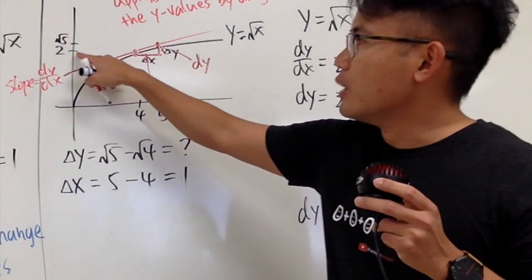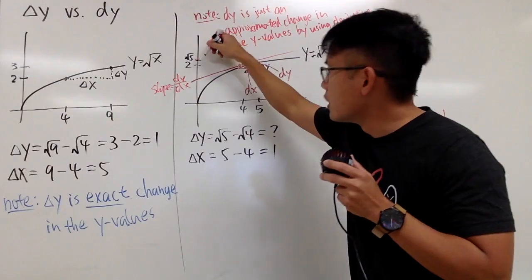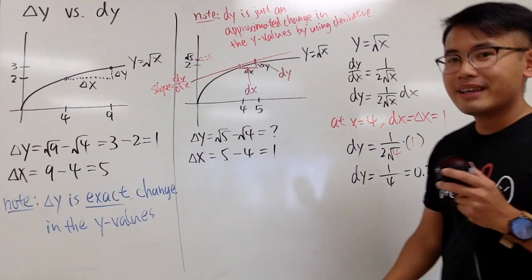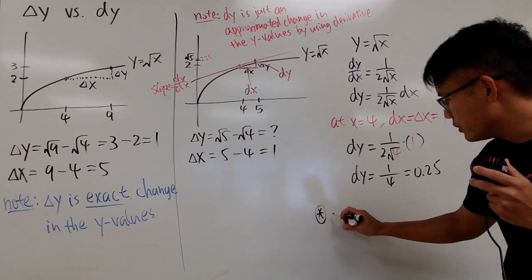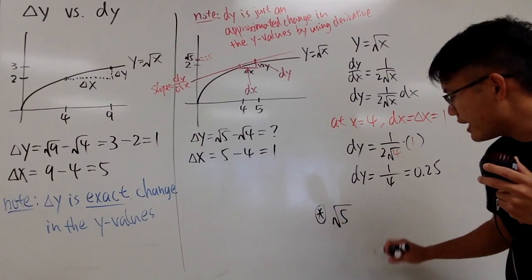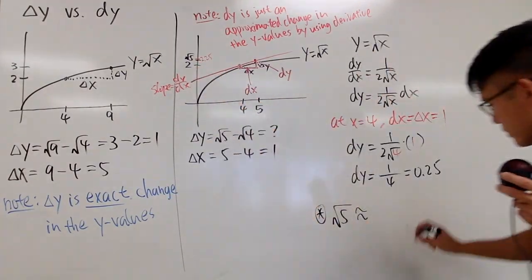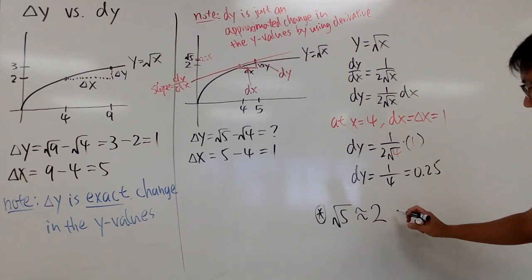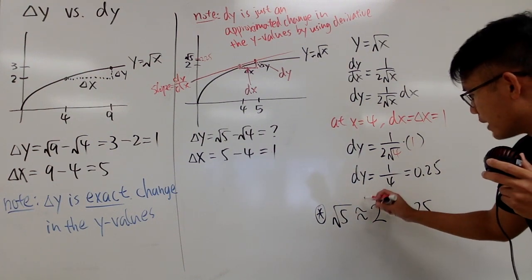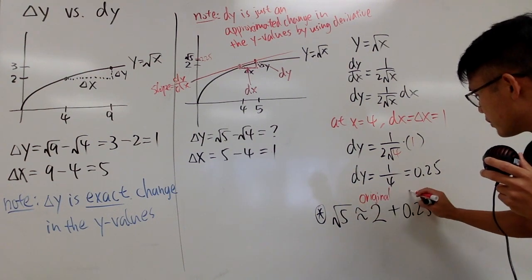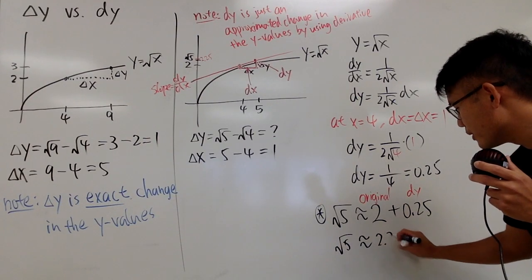And combining with everything we're saying, we're just trying to do the approximation. You see, square root of 5 is approximately the same as when you went up from 2, this is the original y value, and then we add it with the dy in the 0.25. So I will just put this down. This was the original, and then this right here is the dy, and we are saying square root of 5 is approximately 2.25.